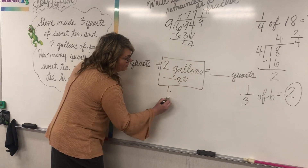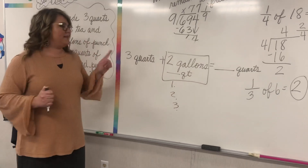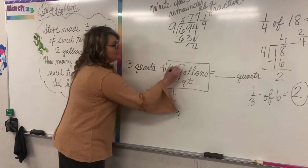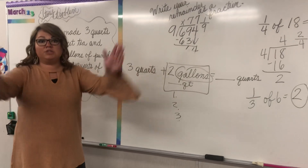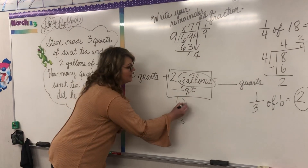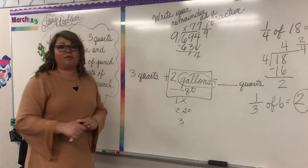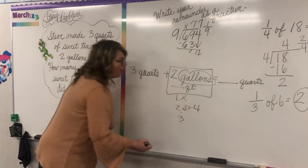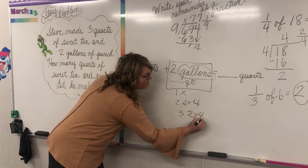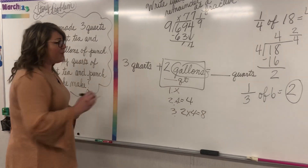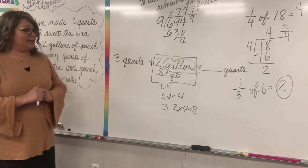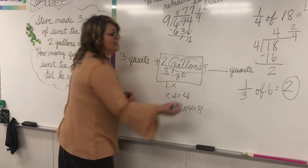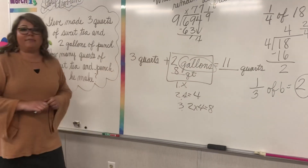We see which one is larger — gallons or quarts? Gallons is larger, so we're going from larger to smaller: multiply. We know that one gallon equals four quarts, so our problem is two times four equals eight. Eight goes in the box, and now we just figure out our final answer: three plus eight is 11. So our answer is 11 quarts.